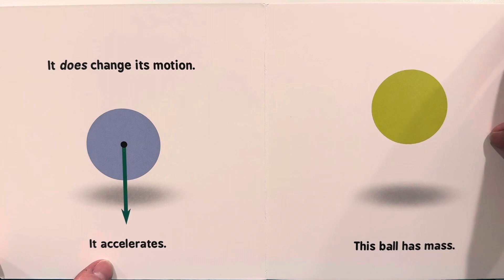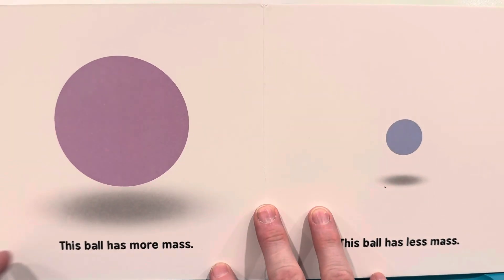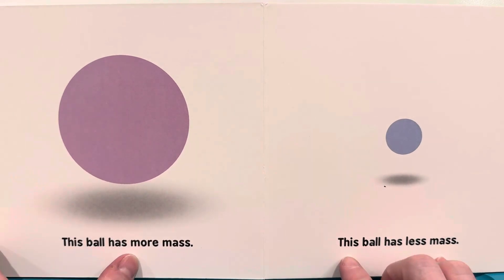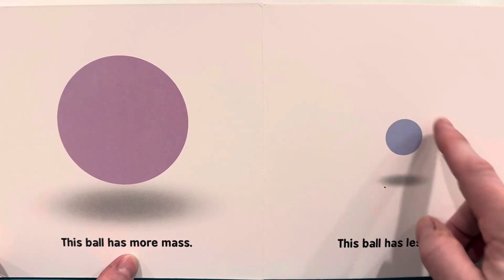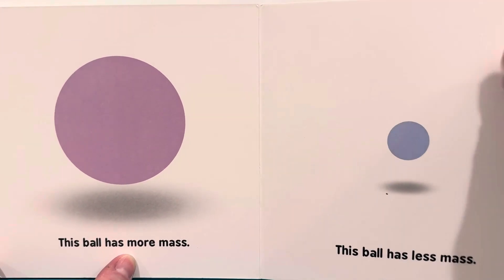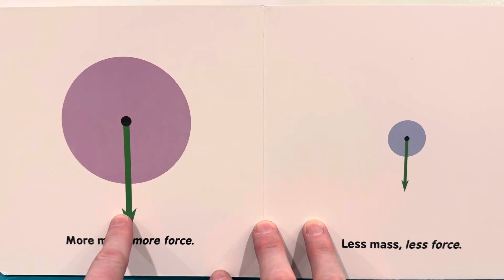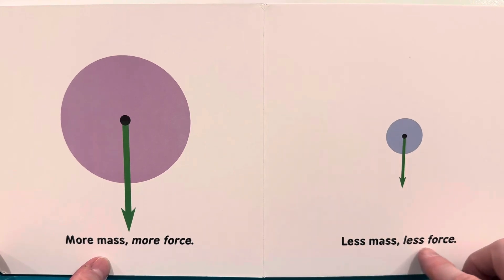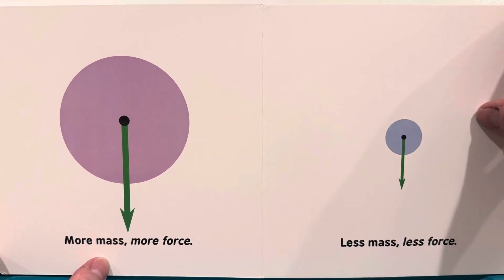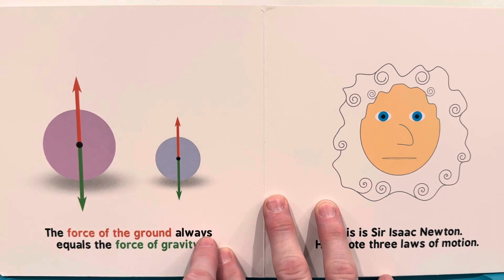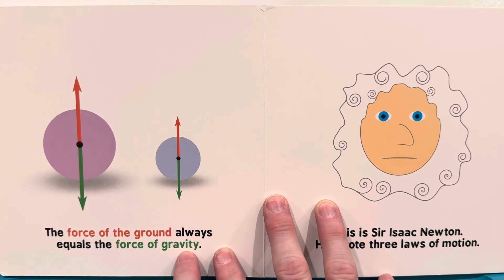This ball has mass. This ball has more mass. This ball has less mass. More mass, more force. Less mass, less force. The force of the ground always equals the force of gravity.